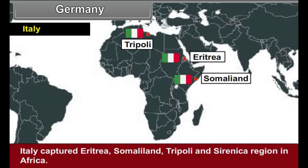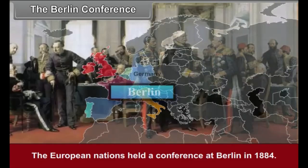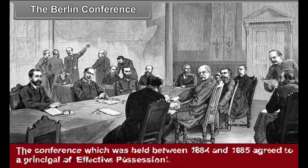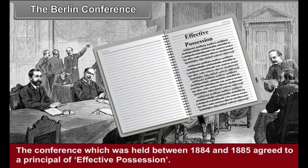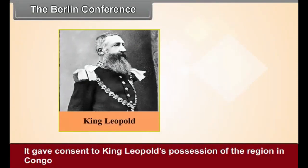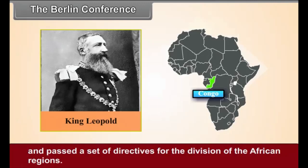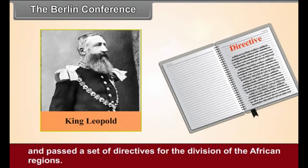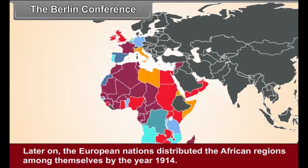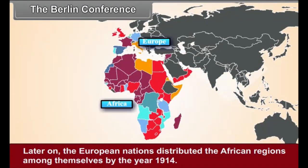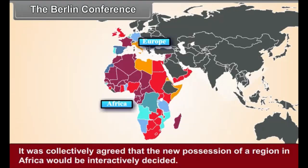The Berlin Conference: the European nations held a conference at Berlin in 1884. The conference, held between 1884 and 1885, agreed to a principle of effective possession. It gave consent to King Leopold's possession of the region in Congo and passed a set of directives for the division of the African regions. Later on, the European nations distributed the African regions among themselves by the year 1914, with a collective agreement that any new possession of a region in Africa would be interactively decided.